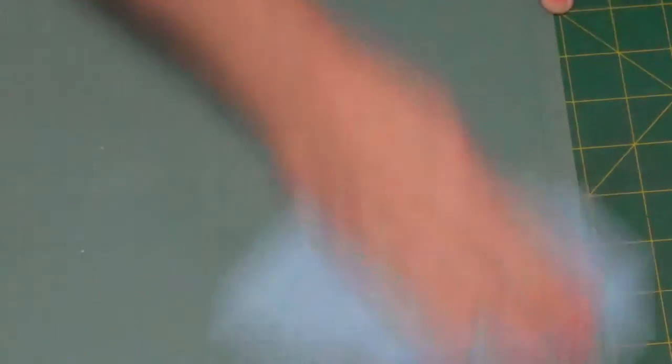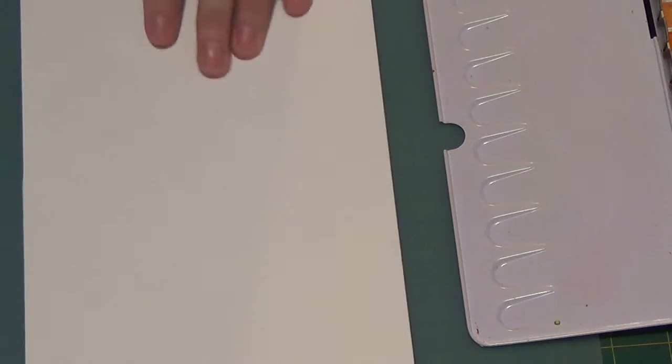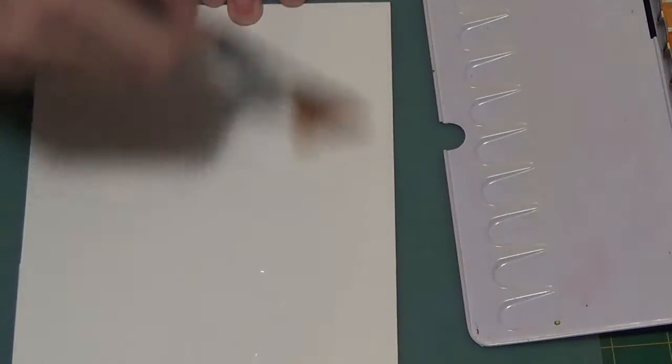So what you're going to need is a piece of cold press student grade watercolor paper, and I have some Winsor Newton and Daniel Smith in this one. So let's get to it. I'm just using an angle brush here to wet my surface.